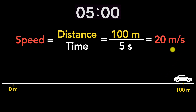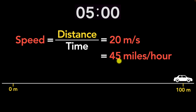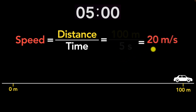Now, there are other units of speed. For example, in our everyday life, the unit of speed is miles per hour, and it turns out 20 meters per second is roughly around 45 miles per hour. But don't worry about how we converted it — it's just to get a feeling for how big this number is. We'll stick to meters per second.